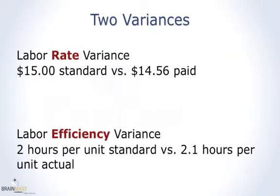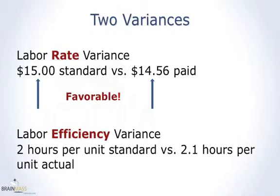Let's look at a very simplified example. For the labor rate variance, the standard called for a $15 per hour rate and you paid $14.56 on average per hour. Is that favorable or unfavorable? It's favorable — you paid less than standard.